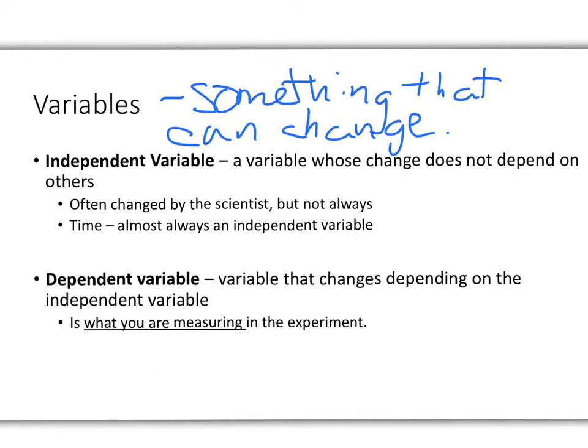So an independent variable, that's a variable whose change does not depend on others. So when we have an experiment, if you or I are the scientist, the independent variable is the thing that we change. Nobody else does. So for each different trial that we're doing in the experiment, we change something to see how it affects things. That's called the independent variable. Most of the time, although not always, time is an independent variable because time really doesn't depend on anything else usually.